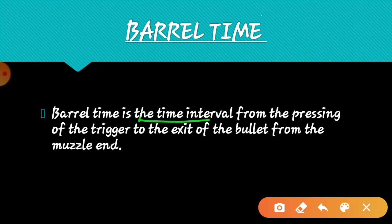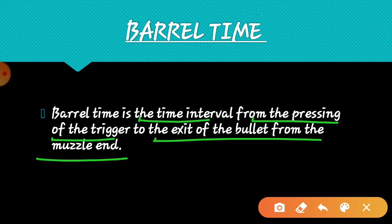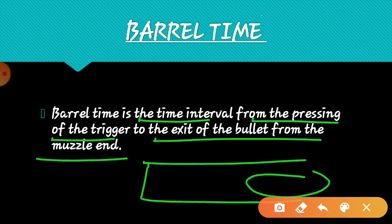Barrel time is the time interval from the pressing of the trigger to the exit of the bullet from the muzzle end. So basically, when you press the trigger, your bullet travels the barrel and leaves the muzzle end - how much time does your bullet travel through the barrel, we call it barrel time. When the firing pin hits and the bullet starts moving, the duration until the bullet leaves the muzzle end is what we call barrel time.